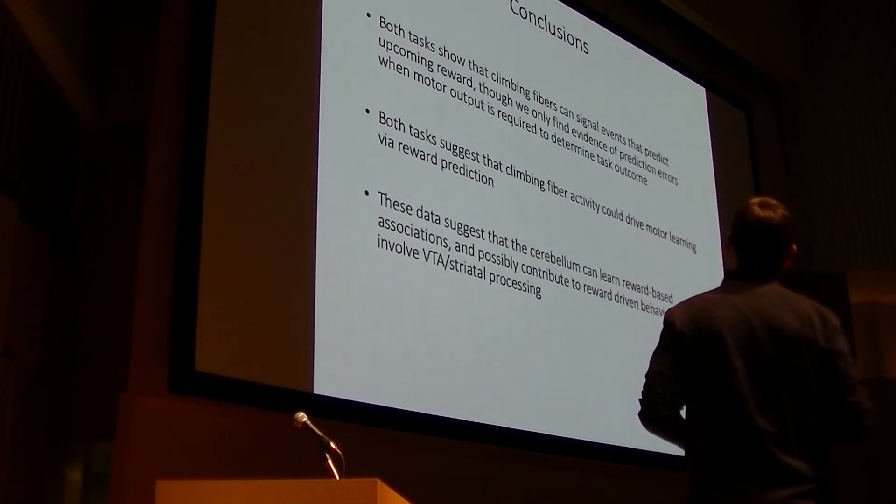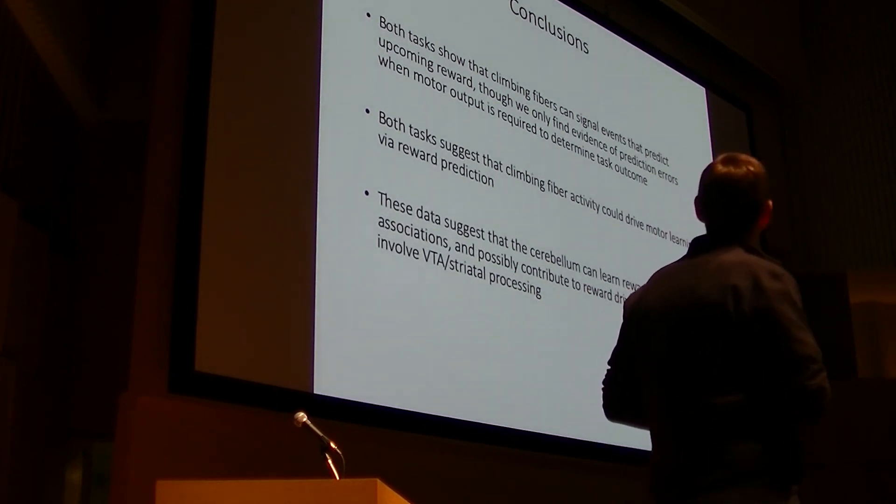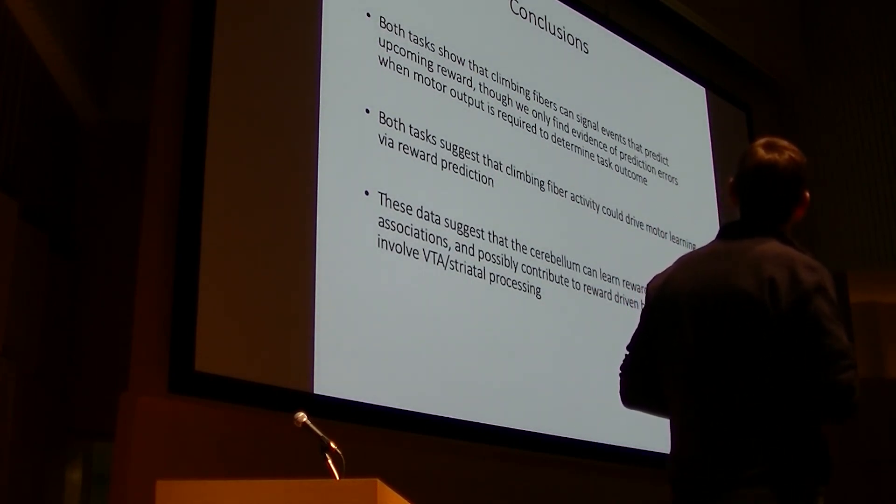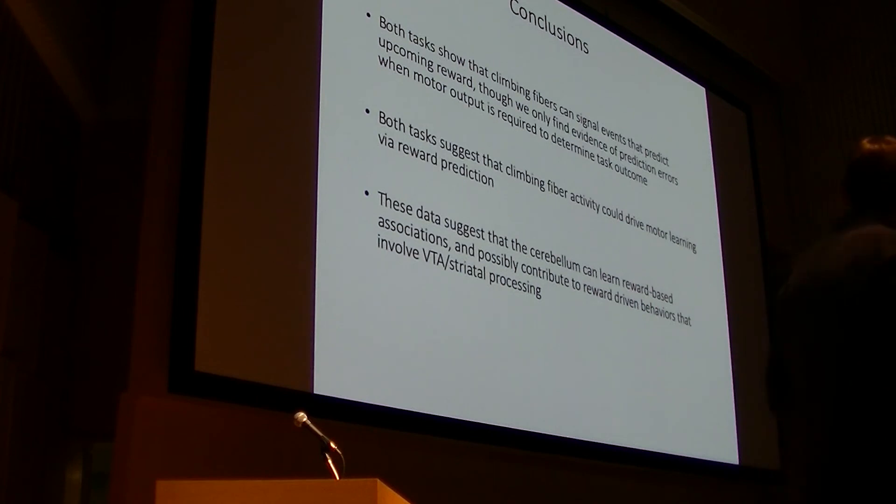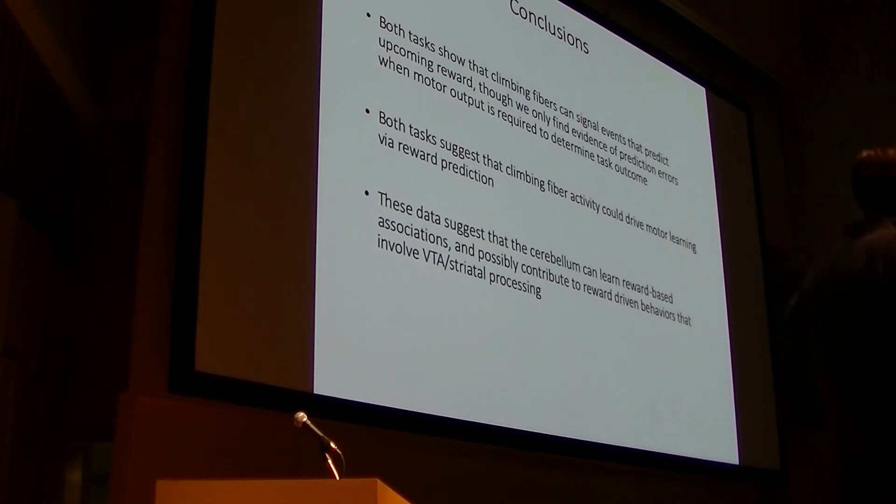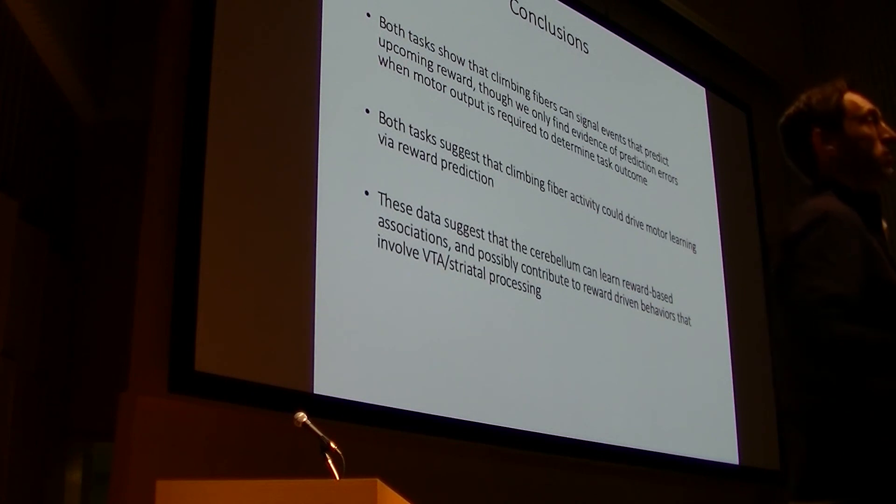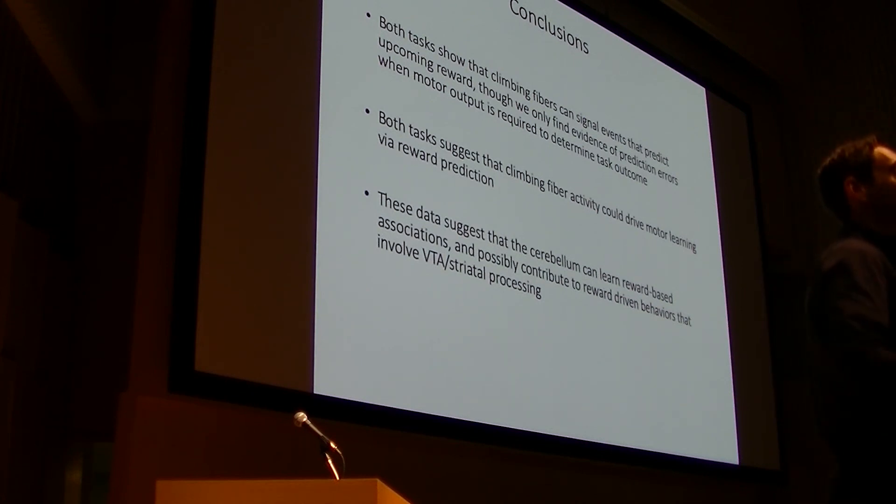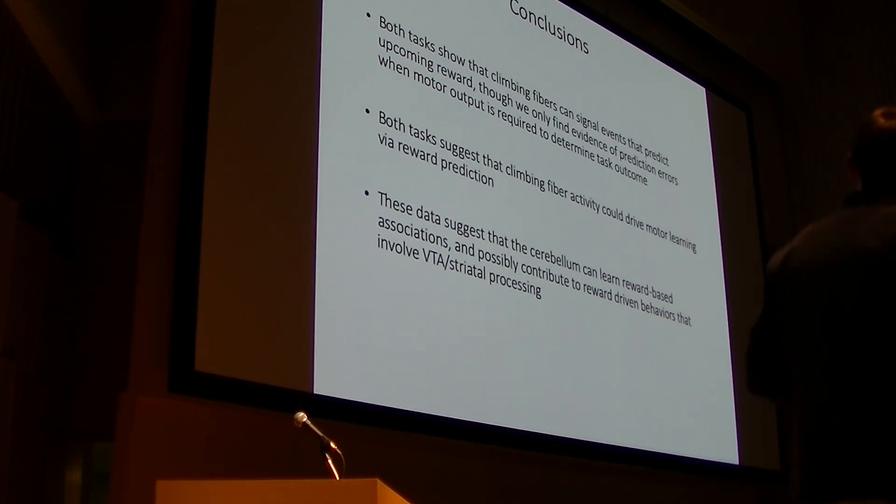It's also true that our task is very different in the sense that the animals don't have to execute a movement in order to influence trial outcome. In places like VTA and striatum, that's thought to be a key feature for sometimes seeing these RPE signals. But we don't know, and we still have work to do to figure out what's different between these two tasks in this regard. But what's similar, and what I just want to leave you with, is that both tasks show the climbing fibers can signal events that predict upcoming reward. And to me, this suggests that climbing fiber activity is well-situated to drive motor learning, and in fact, learning in general, if not necessarily motor learning, via reward prediction. And to me, this suggests that the cerebellum might be able to learn reward-based associations, possibly then contributing to reward-based learning via the connections we know it has to downstream structures, such as the VTA and striatum.